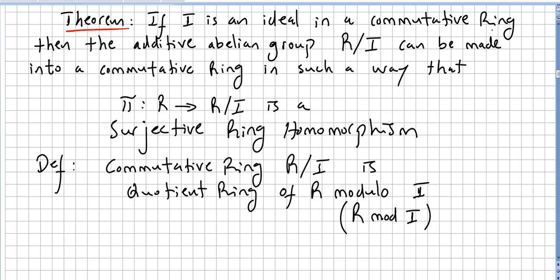If I is an ideal in a commutative ring, then the additive abelian group R/I can be made into a commutative ring.